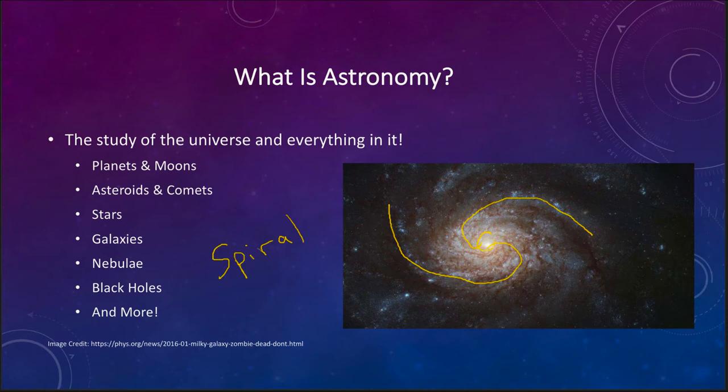There are also different types of galaxies. A spiral is one type of galaxy but there are also other types including things like ellipticals and irregular galaxies that astronomers would also study.